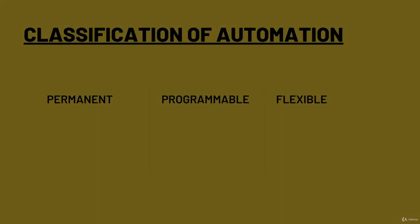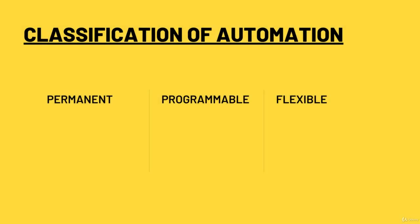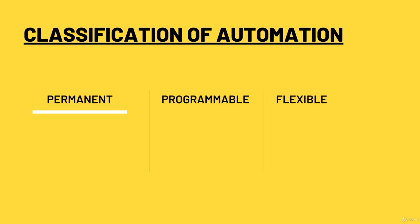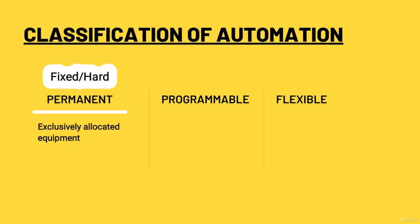There are three types of automation: permanent, programmable, and flexible. Permanent automation is also known as fixed or hard automation. They are typically used for production systems with exclusively allocated equipment and high production needs. The equipment in a fixed automation system is manufactured and designed to perform only one set of operations on one part.